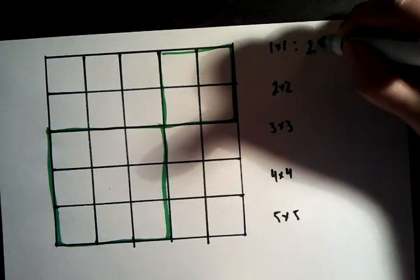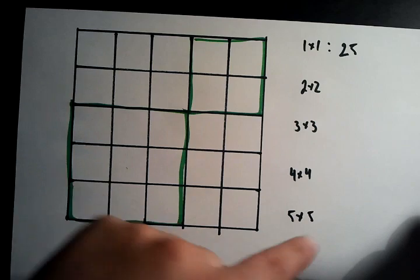1x1, it's easy to see there's 25 of them because we can just count rows and columns.